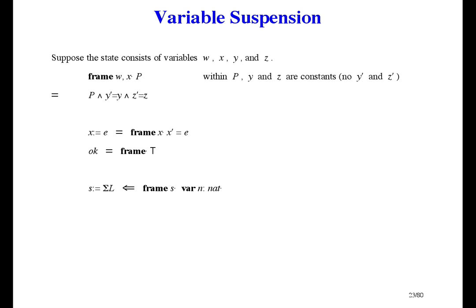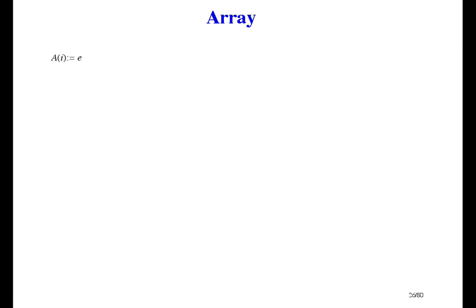Then we declare a local variable n to index through the list. And the problem is now s prime equals the sum, which allows n to change. And we need to refine that, but we've done it before, so we won't repeat it here.